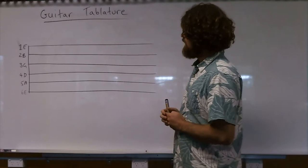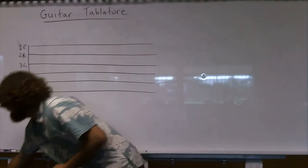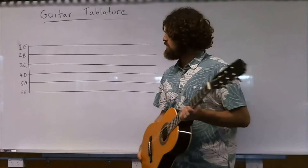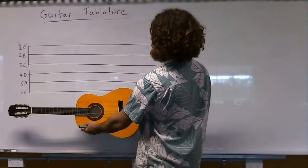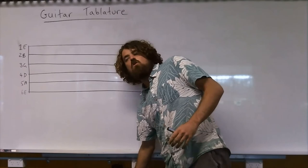The lowest line on the TAB actually represents the thickest string on the guitar, or the one closest to your head. So a good way to think of it is that if you imagine the guitar like that, the six strings of the guitar are represented by the six lines of a TAB.